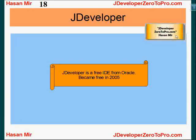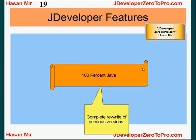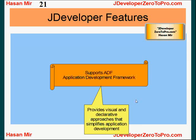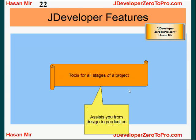JDeveloper became free in 2005 — it's a free IDE from Oracle. What's very powerful about it is that it's 100% written in Java, which means it's platform independent. It's a complete rewrite of the previous version, which could not claim to be 100% Java. You can run it on Windows, Solaris, Linux — wherever there's a JVM it can run. There is also something called Application Development Framework, or ADF, produced by Oracle. The whole purpose of this framework is to make the development process easy through a more visual, drag-and-drop kind of development, and JDeveloper supports ADF.